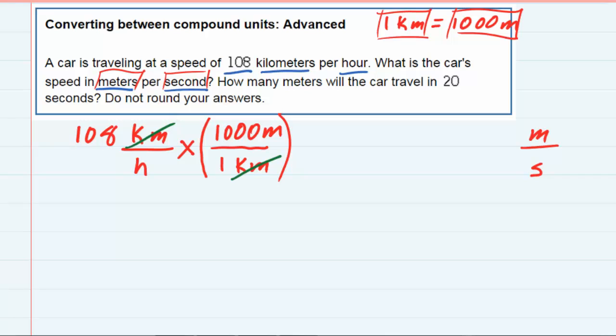But I've got another problem as well, where the hours in the bottom need to be converted to seconds. So I'm going to multiply again. But for this one, I'm looking for a conversion between hours and seconds. So one hour equals 3600 seconds. Or you could think of it as one hour is 60 minutes, each minute is 60 seconds. 60 times 60 is 3600 seconds.